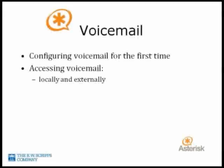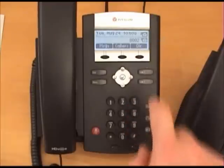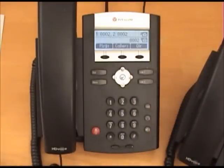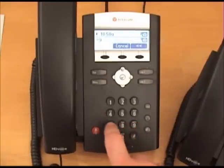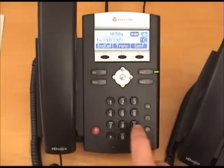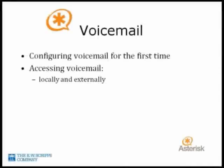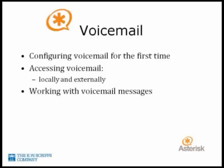If you have a new voicemail waiting, the voicemail indicator light should be flashing. Internally, you can access your voicemail by dialing star 97 and then lifting your handset, pressing the speaker button, or using your headset. You will be prompted for your voicemail password followed by a pound sign. After you have connected to your voicemail, follow the verbal prompts to listen, save, and delete voicemails.